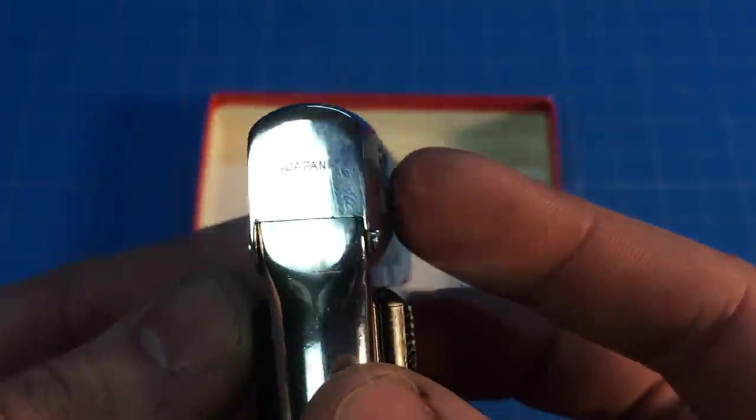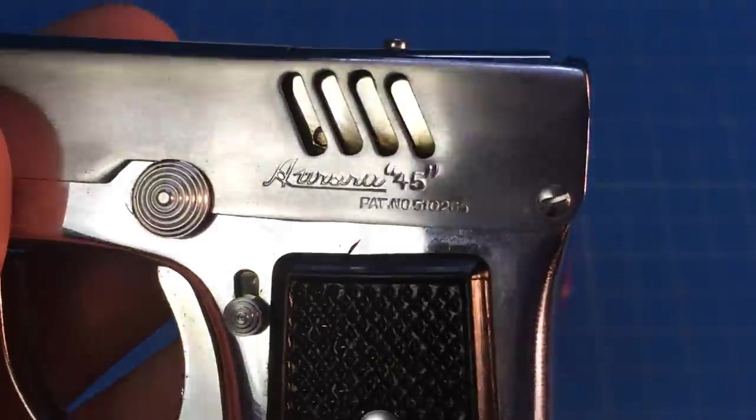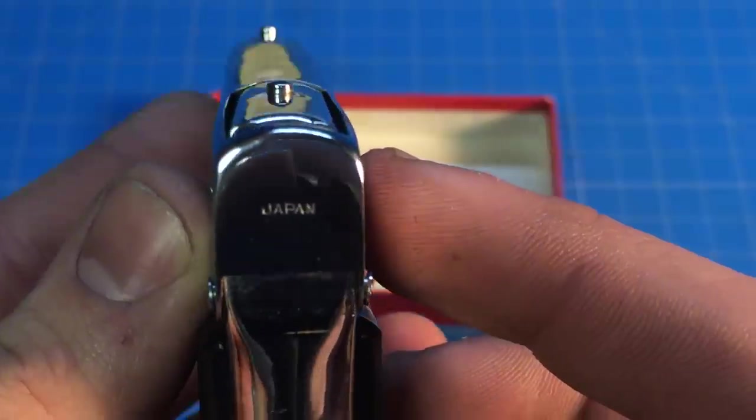I don't know why a lighter needs iron sights, but I guess it adds to the realistic appeal. On both sides you have ventilation holes, and you can see it says Aurora 45 with a patent number and Made in Japan logo. Really great quality.